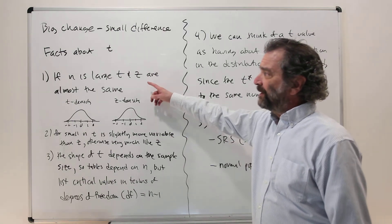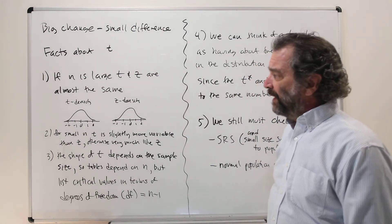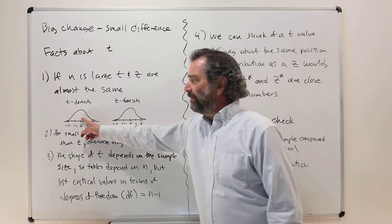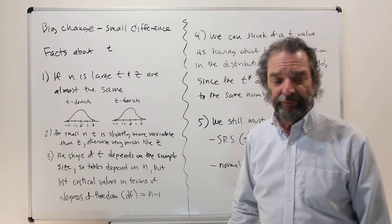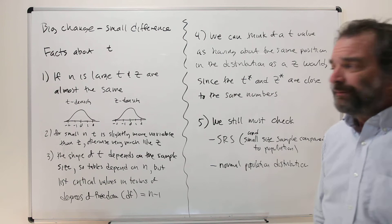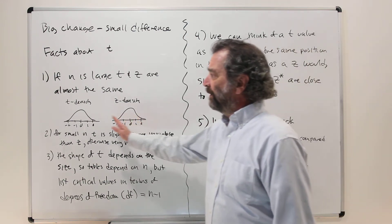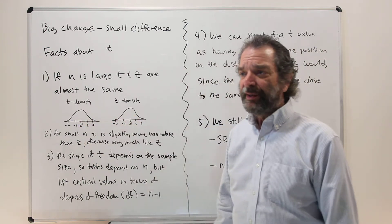Number one says if n is large, t and z are almost the same. In fact, if you sketch a t density function and a z density function, you pretty much can't tell the difference by eye. They're both symmetric, mound-shaped, have that characteristic bell curve.